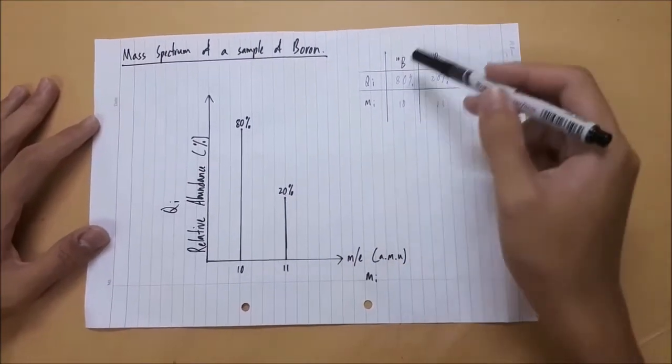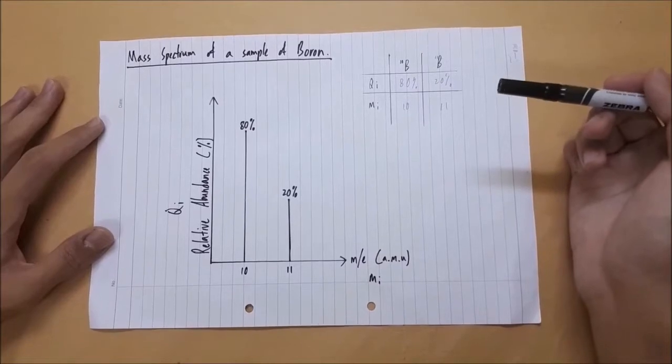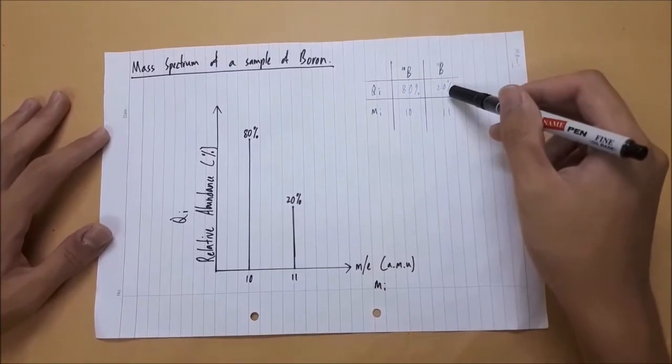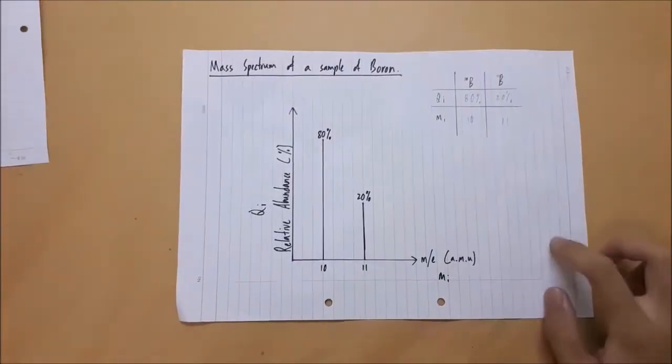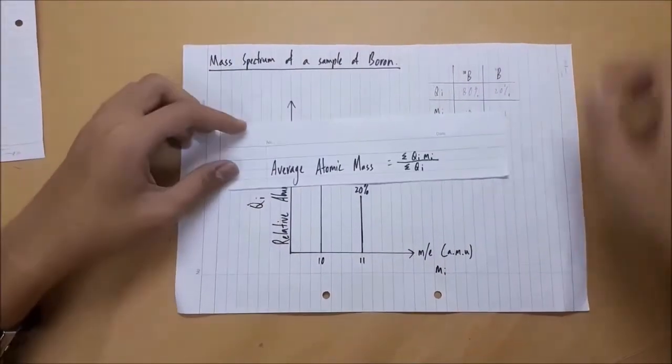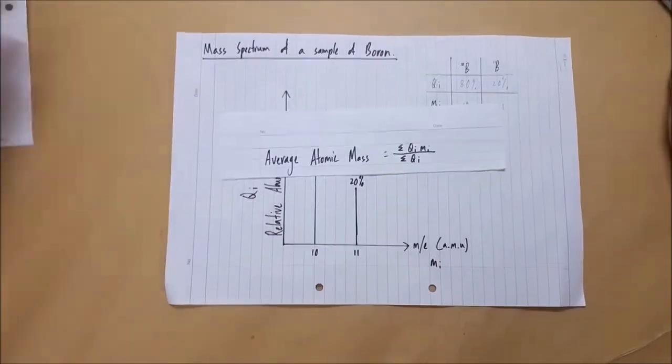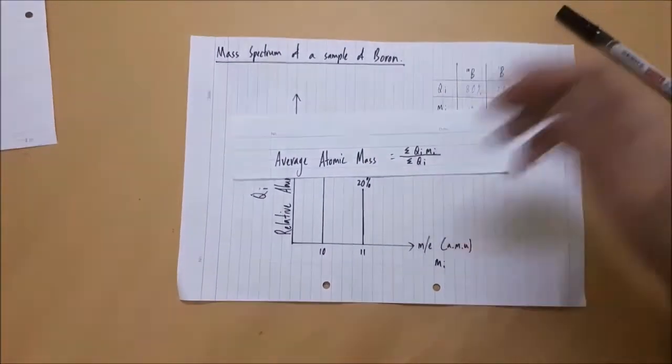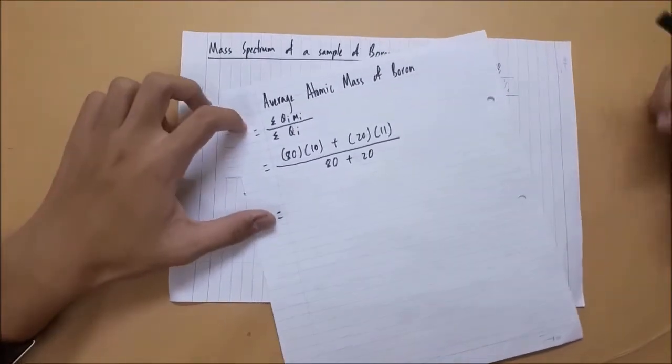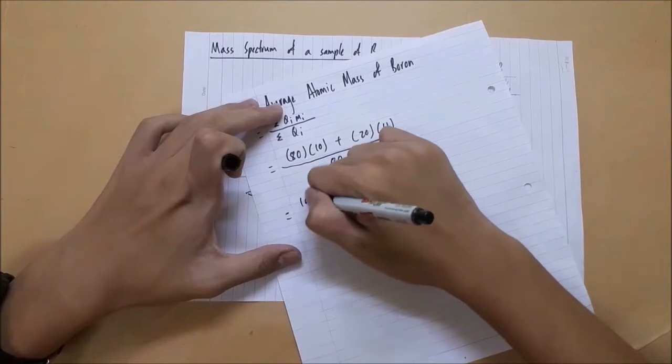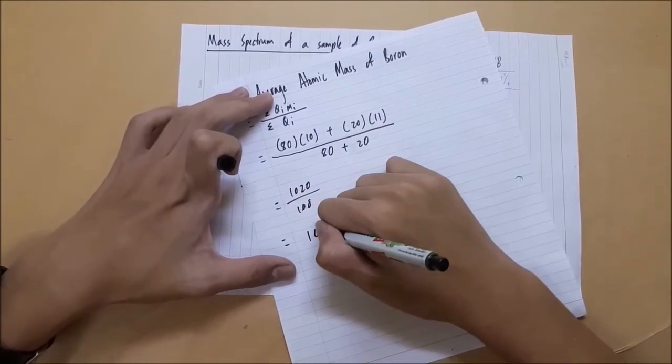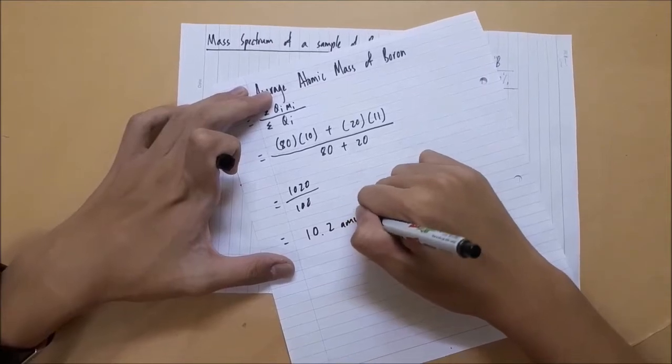So from this mass spectrum, we know that boron has two isotopes, namely boron-10 and boron-11 with the relative abundance of 80% and 20% respectively. Now with these data, we can calculate the average atomic mass of boron by using this formula, sigma qi mi over sigma qi. The symbol sigma means sum of. From the data, we have 80 times 10 plus 20 times 11 over 80 plus 20. We will get 1020 over 100. Press the calculator and we will get 10.2 amu.